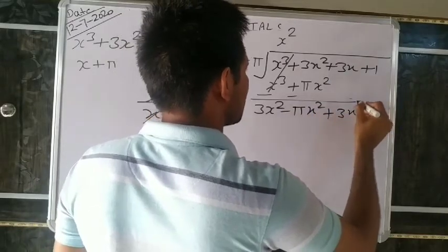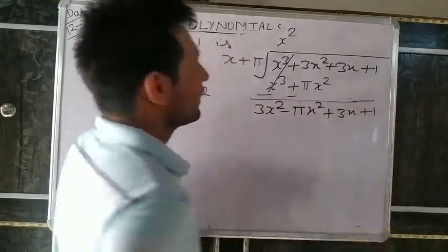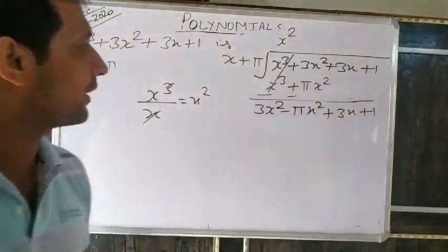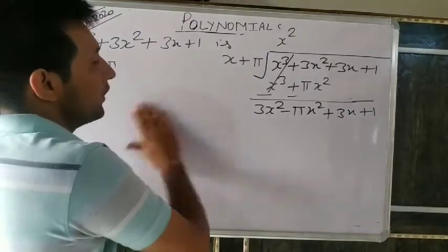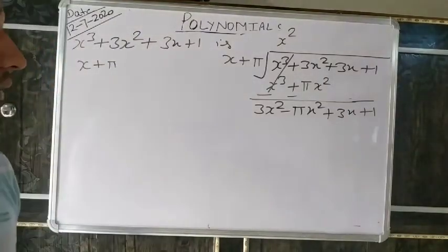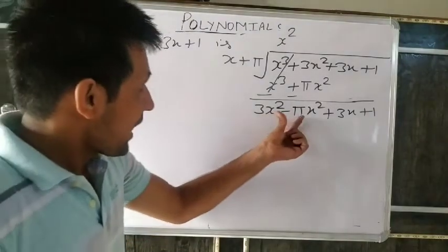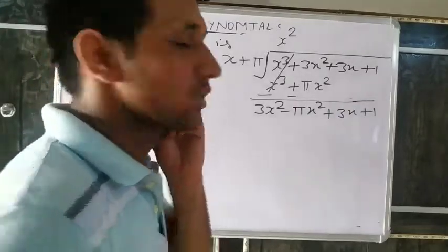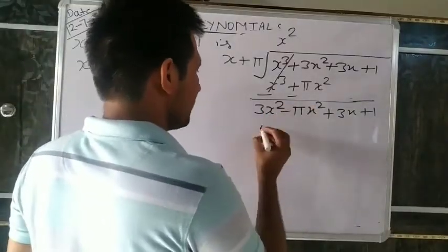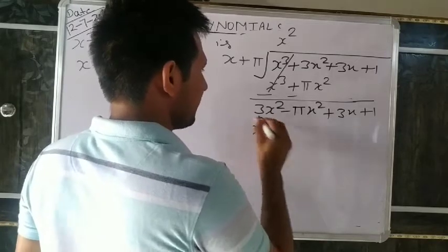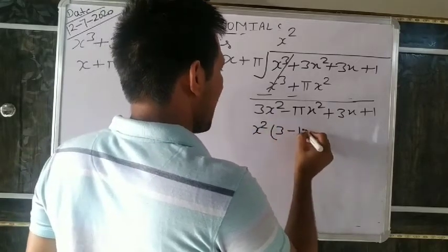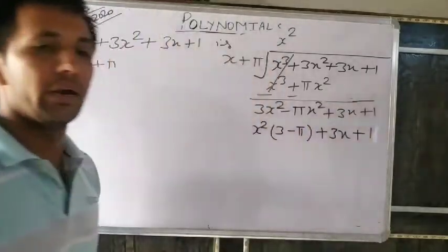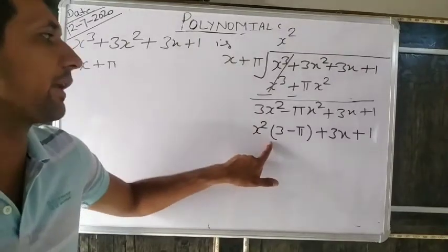Now write a number in the quotient — when multiplied it becomes (3−π)x². Always write the polynomial in decreasing order. The first term (3−π)x² divided by x gives (3−π)x. So write plus (3−π)x in the quotient. Multiply (3−π)x by (x+π): (3−π)x times x gives (3−π)x², and times π gives π(3−π)x.